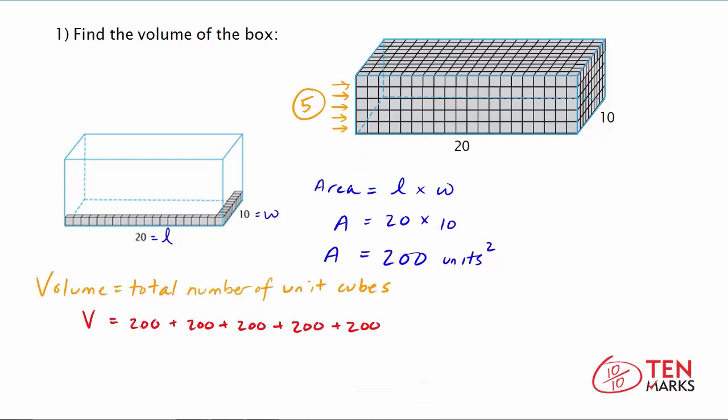So then what you want to do is add 200 five times for each of the five layers, because we know that one layer has 200 unit cubes. So when you do this addition, you get the volume to be equal to 1,000 unit cubes. And you could also say units cubed, with little three.